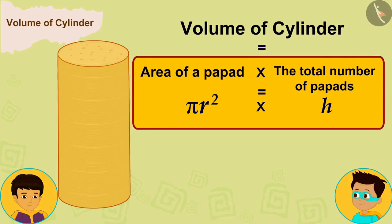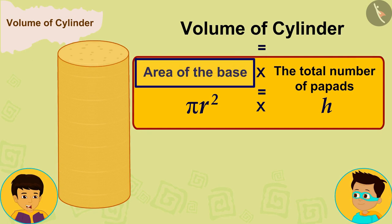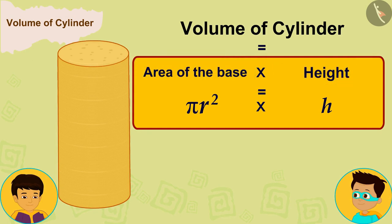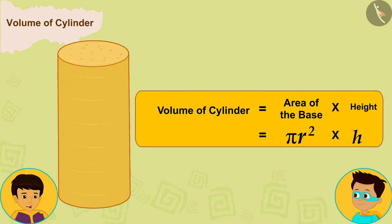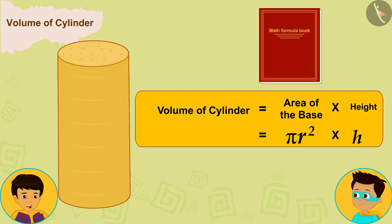Now, if we look closely, we will notice that the area of a papad is equal to the area of the base of this cylindrical box. Therefore, we can also write the formula of the volume of a cylinder as the product of the area of the base and the height. Let me quickly write it in my math formula book.